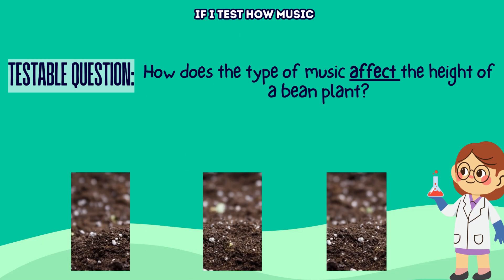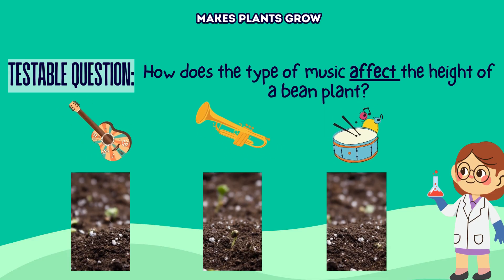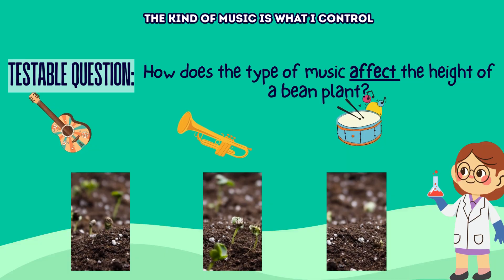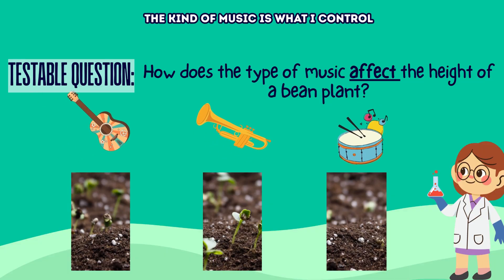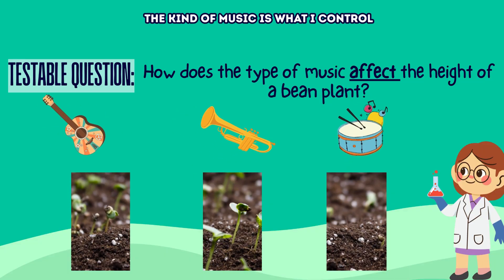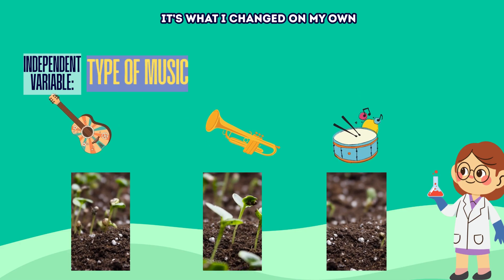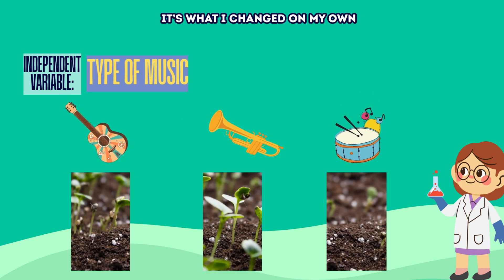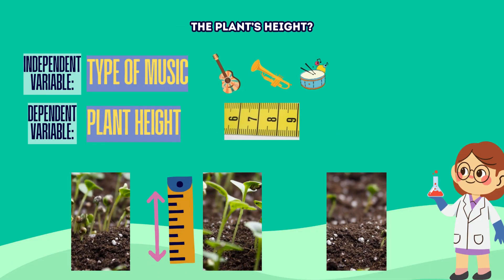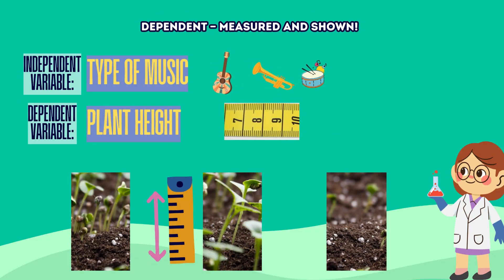If I test how music makes plants grow, the kind of music is what I control. That's independent — it's what I changed on my own. The plant's height is dependent: measured and strong.